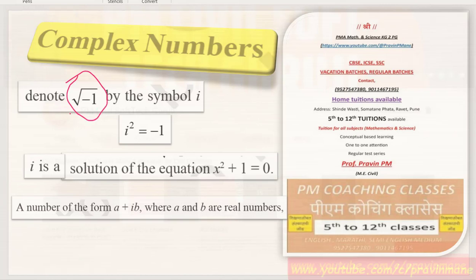The complex number is the square root of minus one, and this is denoted by the symbol i, called iota. If we square this, i squared is equal to minus one. This is the value of the complex number. i is a solution of the equation x squared plus one equals zero.